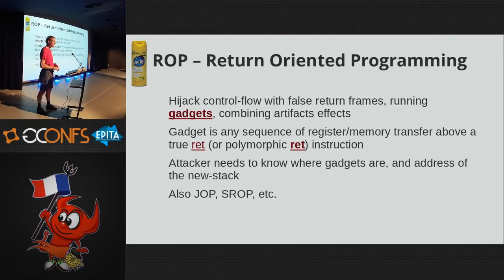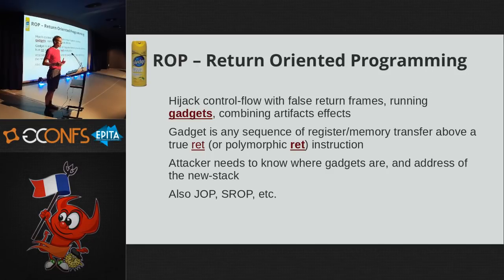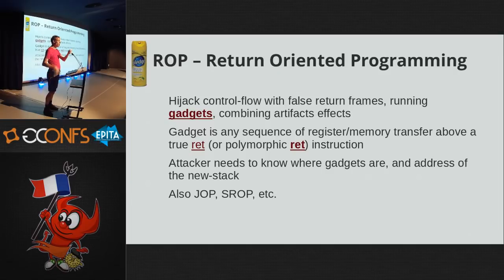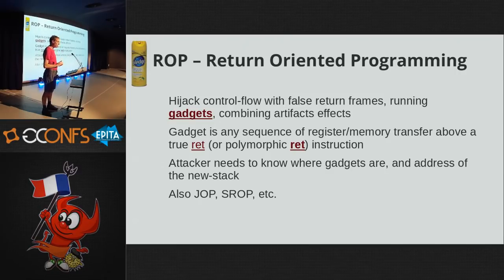On x86 architecture it's even worse, because it's a variable-sized architecture. You also have polymorphic sequences that occur in the instruction stream. For example, if an instruction loads a value into a register and that value contains the byte 0xC3, that byte occurs in the instruction stream as a return. Therefore the instructions before that load - even though they weren't intended to be real instructions - can be used as gadgets. It's quite a terrifying architecture. The attacker needs to know a few things, and this is a recurring trend.